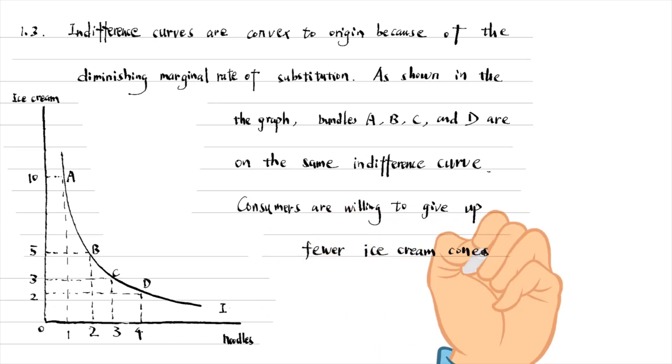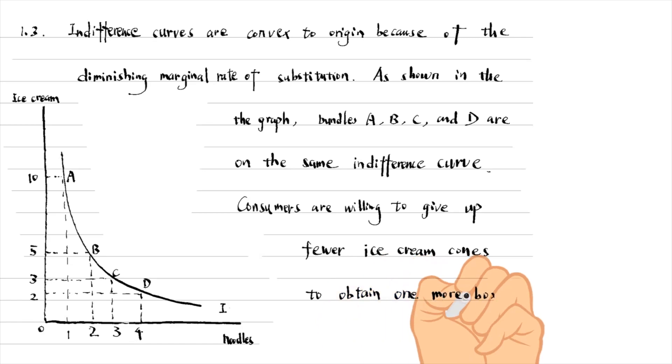For example, the consumer has 10 ice cream cones and one box of noodles at A. She's willing to give up five ice cream cones for one more box of noodles. At point B, she will only trade two ice cream cones for one more noodle box.